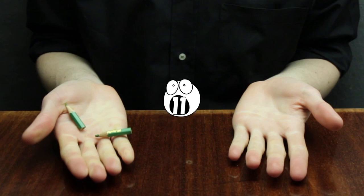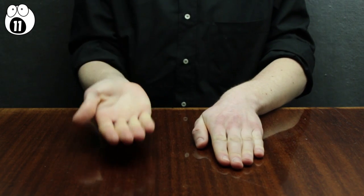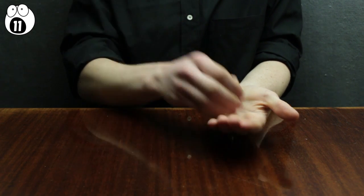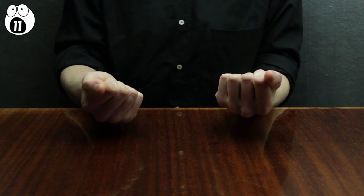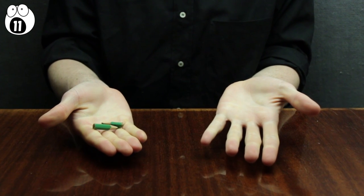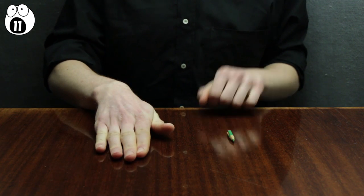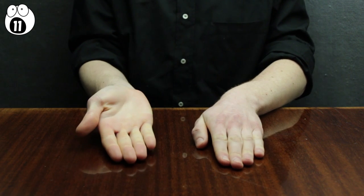Number 11, the pencil trick. Let's do this one in slow motion to show you how it's done. First, perform the first four steps of the trick. There's nothing sneaky going on here.